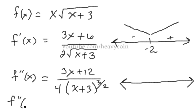F double prime of negative 2. We plug negative 2 in the denominator, we end up getting 1 because negative 2 plus 3 is 1. And plug negative 2 in the numerator, you get negative 6 plus 12, so that ends up being a positive number.